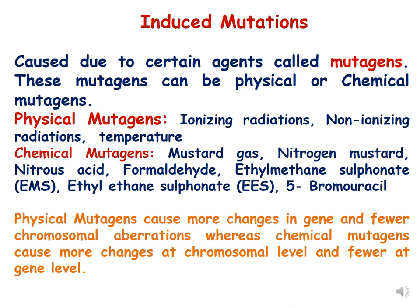Temperature is also a physical mutagen. Chemical mutagens are chemicals which induce mutations. There are several examples of chemical mutagens: mustard gas, nitrogen mustard, nitrous acid, formaldehyde, ethyl methane sulfonate (EMS), ethyl ethane sulfonate (EES), 5-bromouracil, ethidium bromide, etc. Physical mutagens cause more changes at the gene level and fewer chromosomal aberrations, whereas chemical mutagens cause more changes at the chromosomal level and fewer at the gene level.